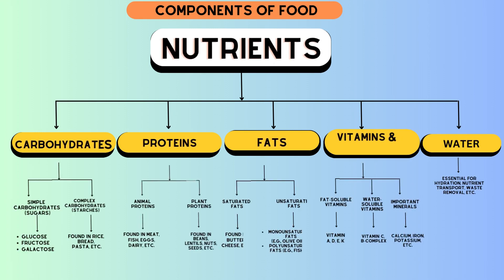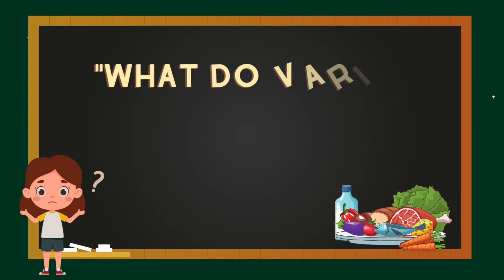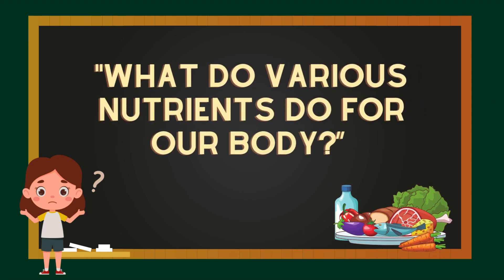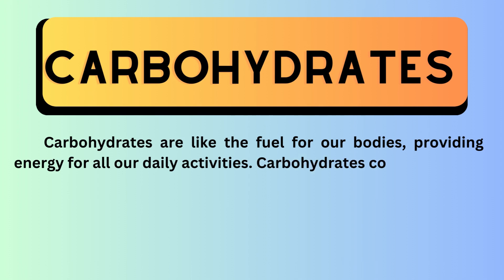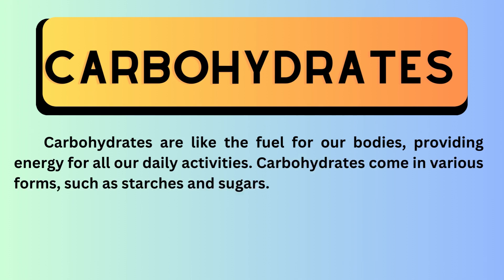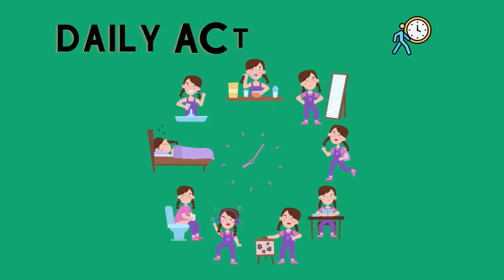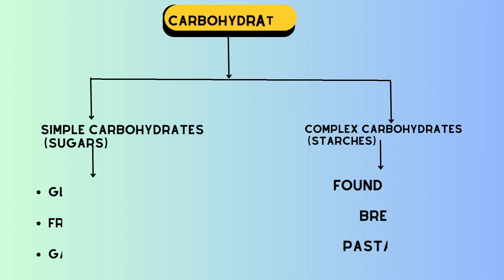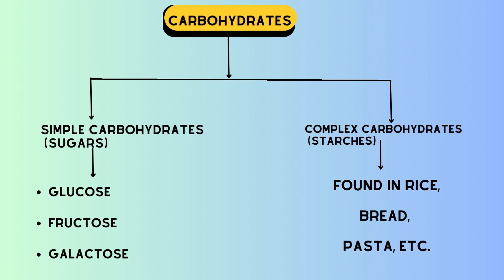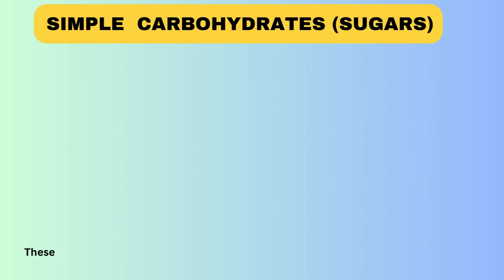This chart shows all the components of food and their subtypes. What do various nutrients do for our body? Let's see one by one. Our first component is carbohydrates. Carbohydrates are like the fuel for our bodies, providing energy for all our daily activities. They are one of the primary sources of energy.